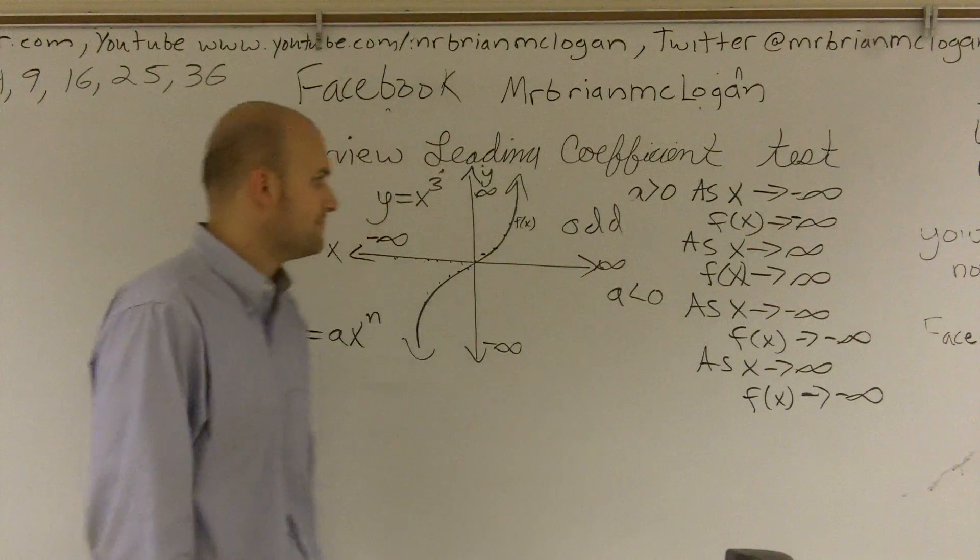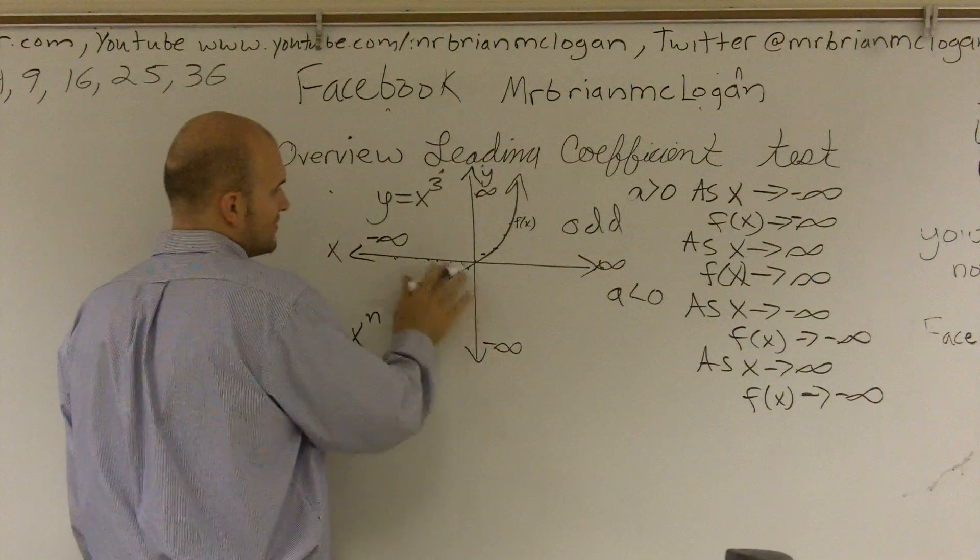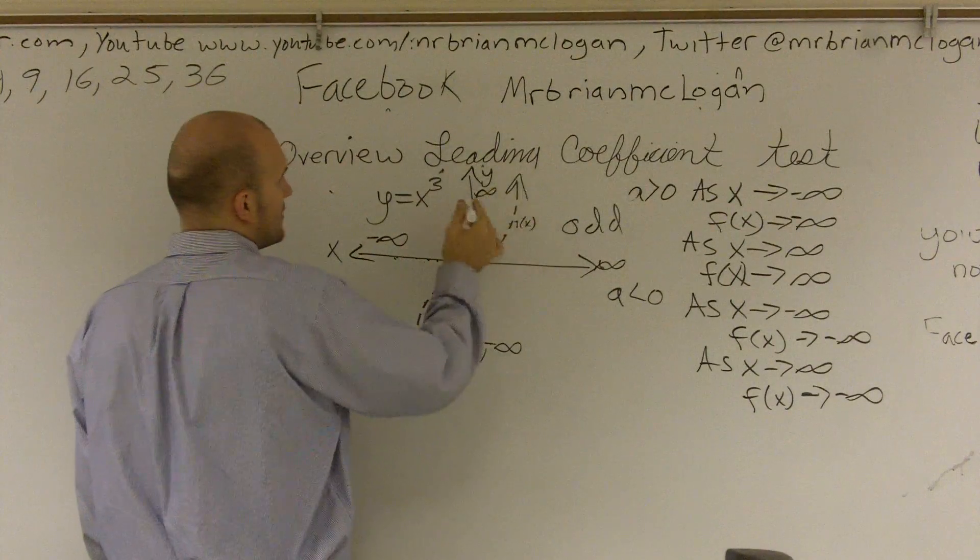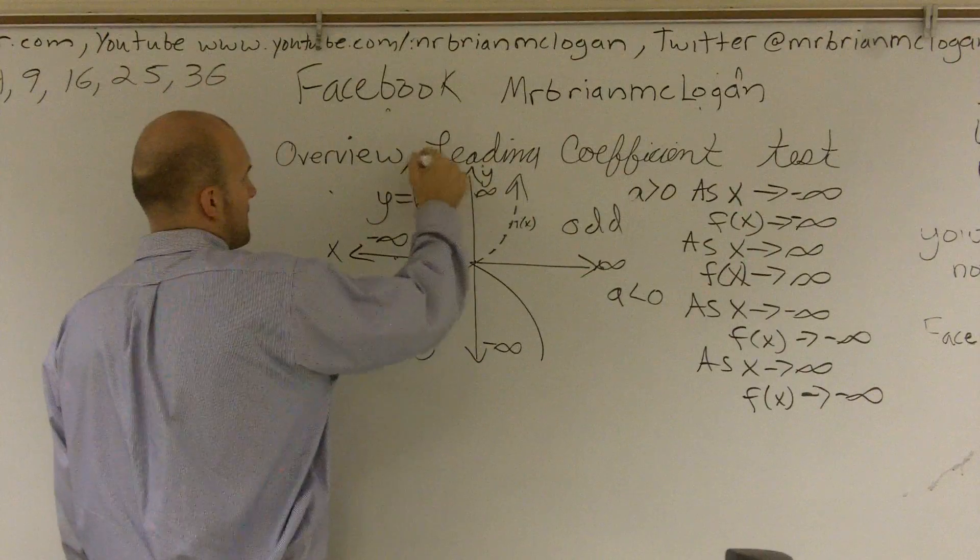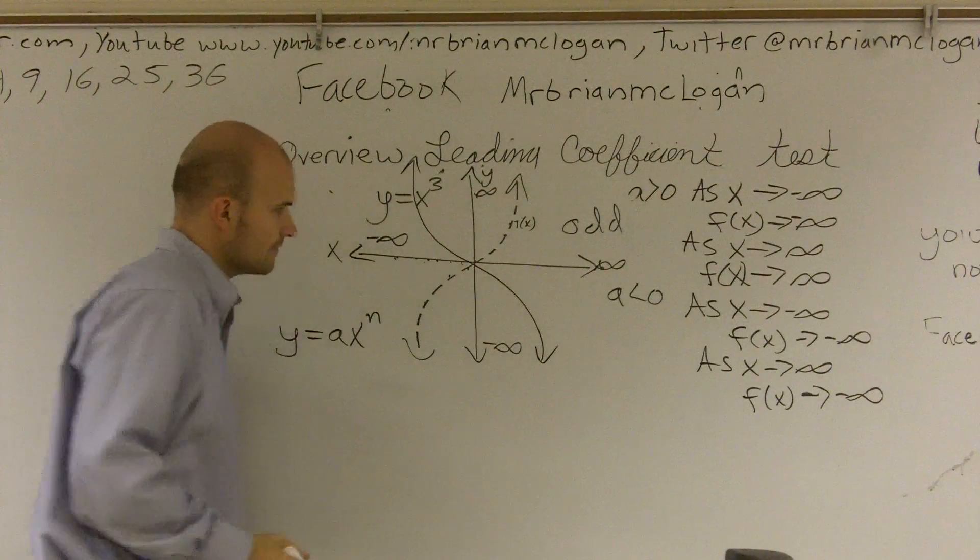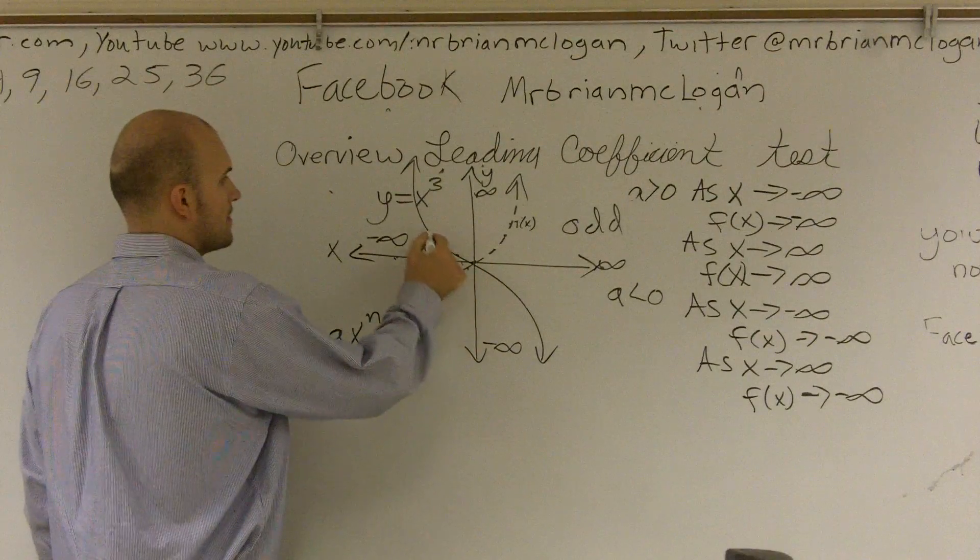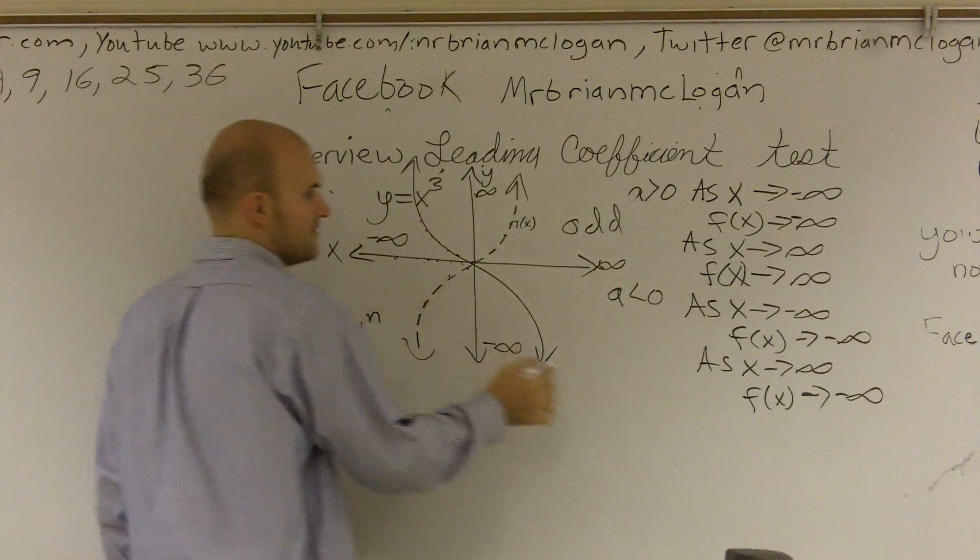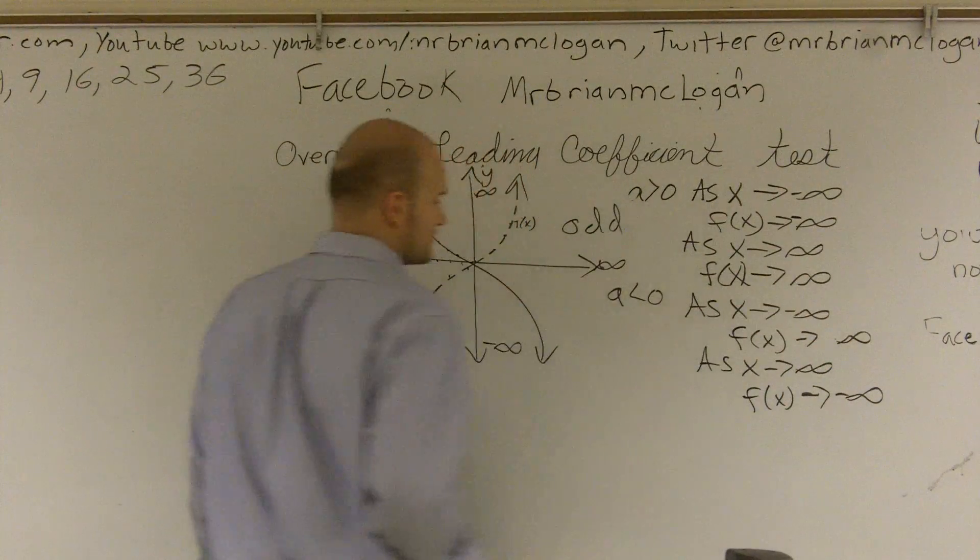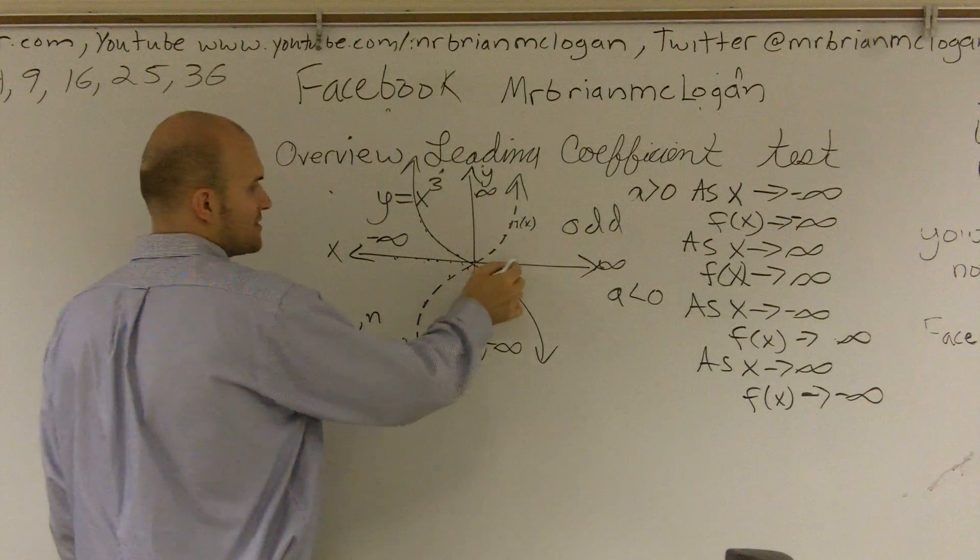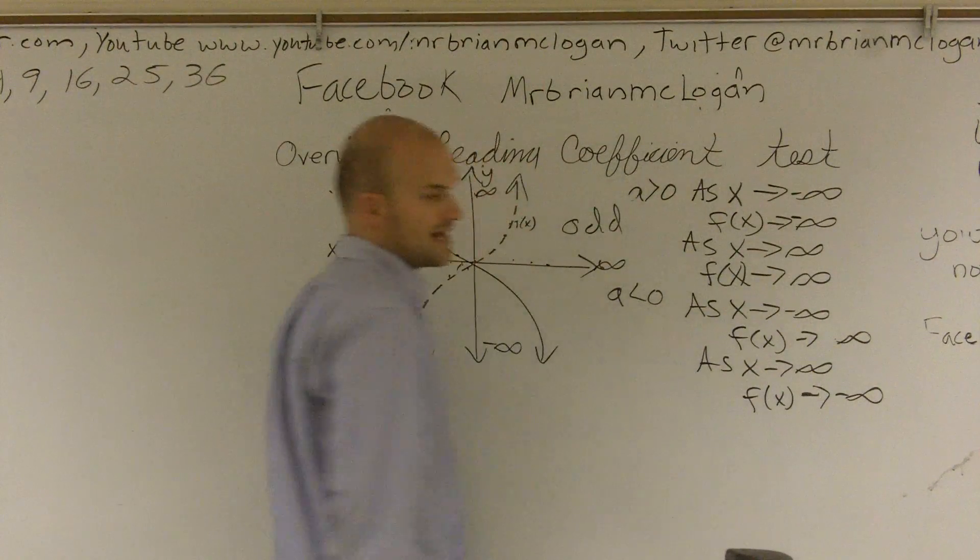Then if a is less than zero, so let's kind of dot this one out, that's going to look something like this. So as x goes to negative infinity, my graph is going towards infinity. So it's x. And then as x goes towards infinity, my f of x goes down to negative infinity, which is exactly correct for there.